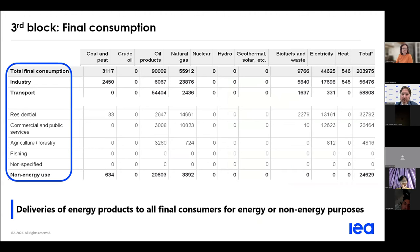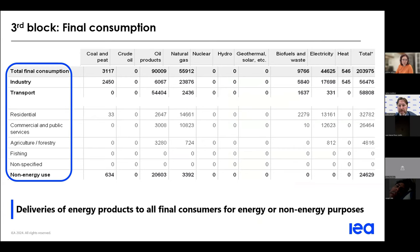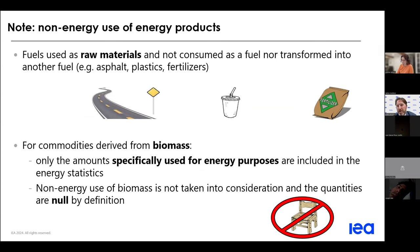比如锅炉所使用的自用能源不计算在转换流程当中。最后一个部分是能源在能源工业以外的消耗，包括其他工业、运输业，不管是民用、商用、农林渔业等等所使用的能源。比如在钢铁业，运输所使用到的能源不会被计算在钢铁业里面，而是被分类在运输业所使用的能源来计算。